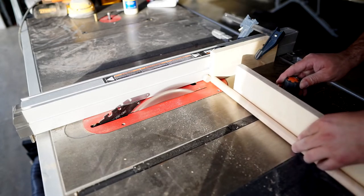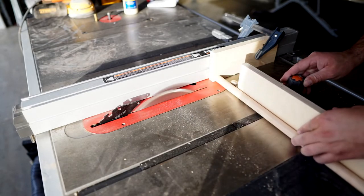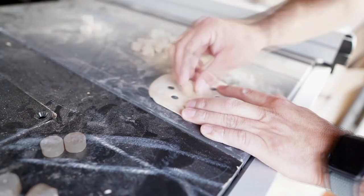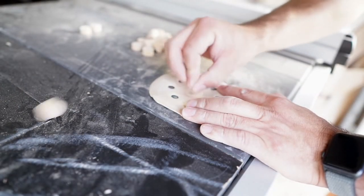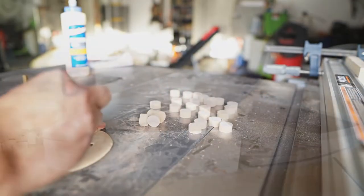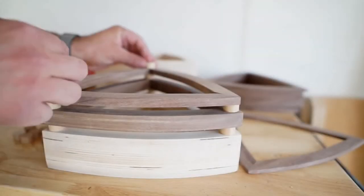Next I grabbed the three-quarter inch dowel and cut and sanded about a million of these little quarter inch pieces that would go in between each of the triangle layers. Then I did a little dry test before finishing.